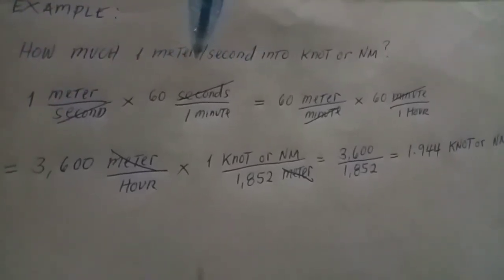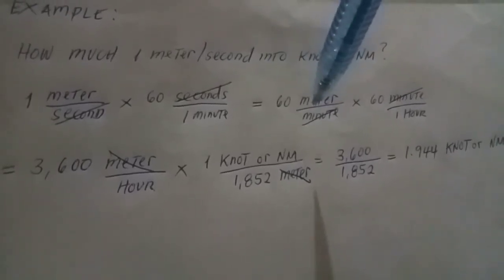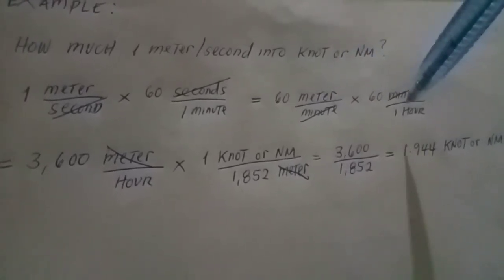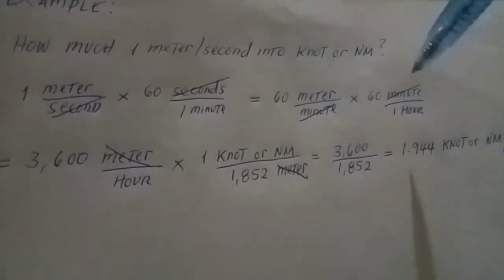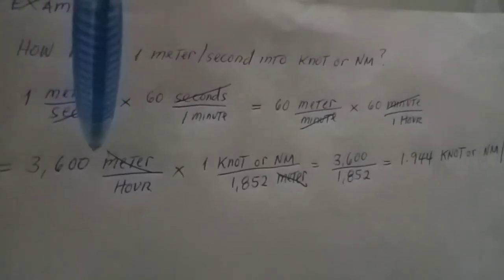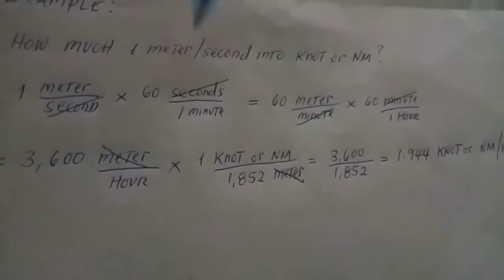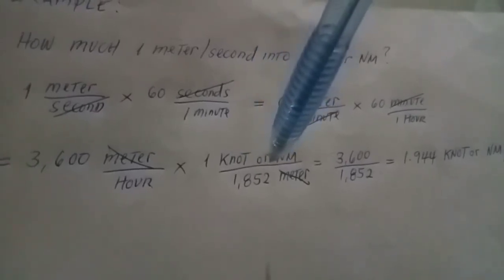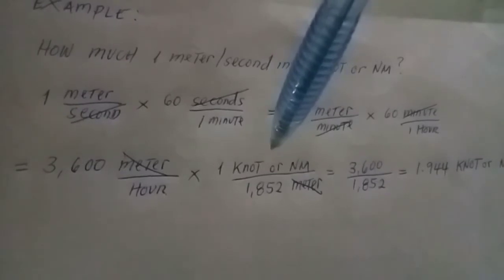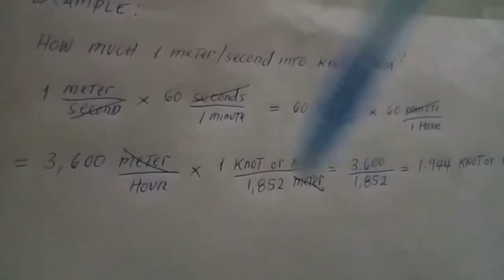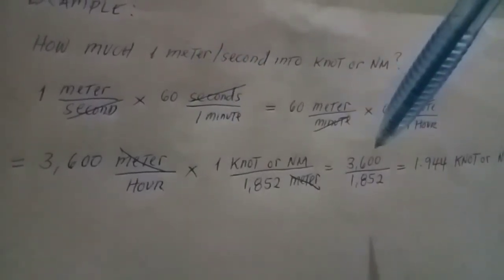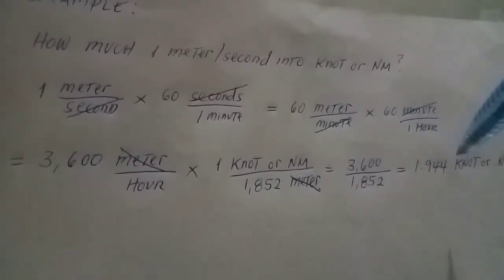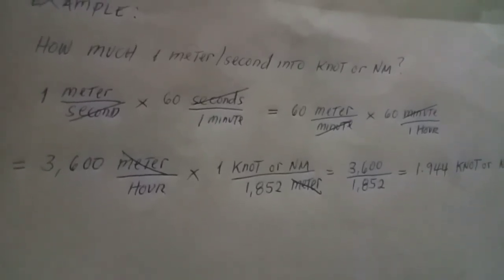Then, since one hour equals 60 minutes, we multiply by 60 minutes per hour and cancel out the minutes, giving us 3600 meters per hour. Next, we multiply by one knot per 1852 meters — because one nautical mile equals 1852 meters. We cancel out the meters, leaving us with 3600 divided by 1852.